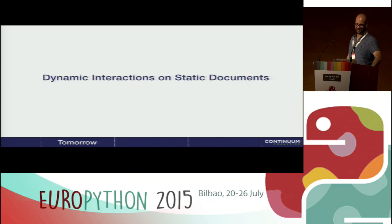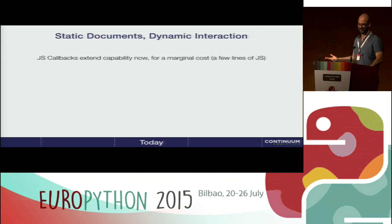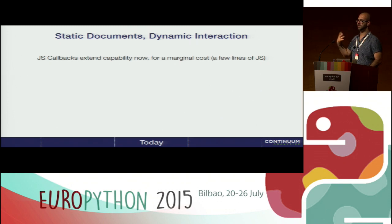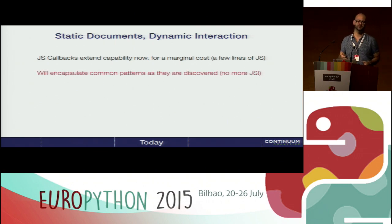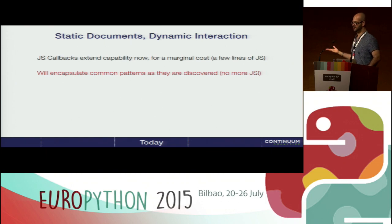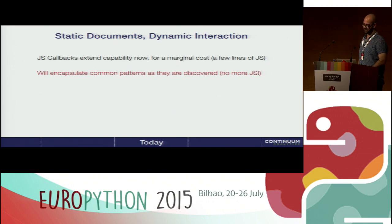One of the main important new things is dynamic interactions on static documents. With JavaScript callbacks, you now have the capability to create nice interactions within static plots with just a few lines of JavaScript. Pushing back from what we claim, probably writing a few lines of JavaScript is a good thing because you're still in your Python environment — it's just that you're integrating your JavaScript code within your Python code. In the future, we really want to encapsulate a lot of those patterns and reduce the JavaScript you need for interactions.